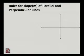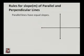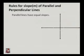Now our main topic today is to find the slope of parallel and perpendicular lines. It is very easy to say that the slopes of two parallel lines are equal — parallel lines have equal slopes. The angle made by two parallel lines with the positive x-direction is always the same.